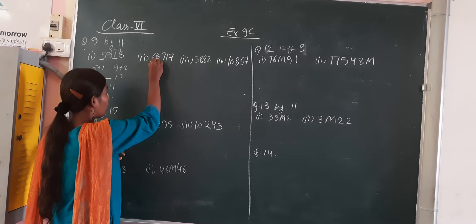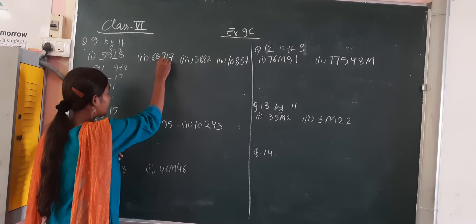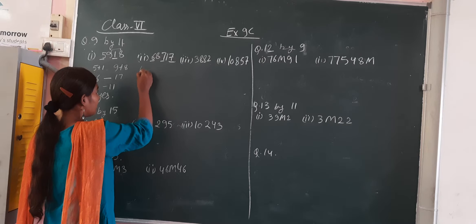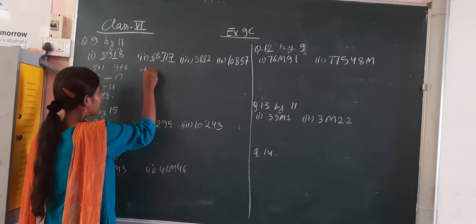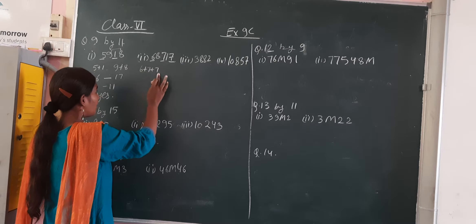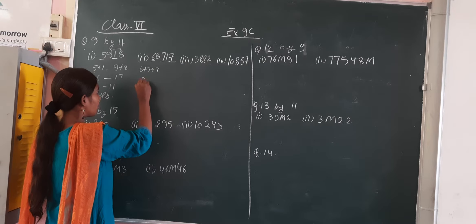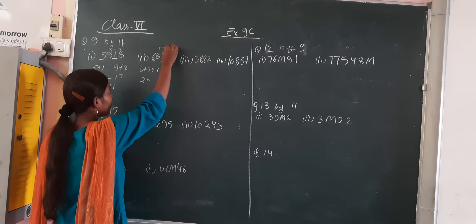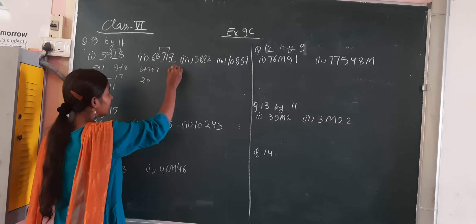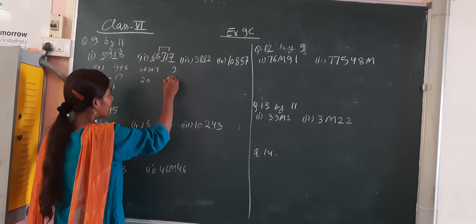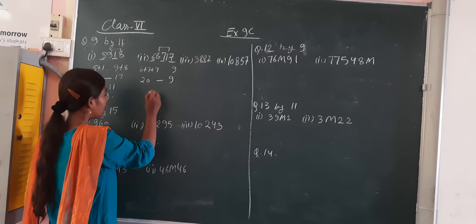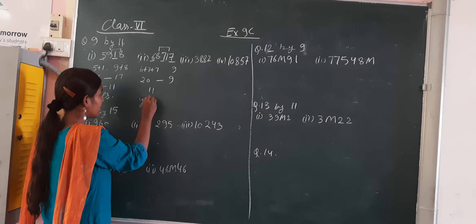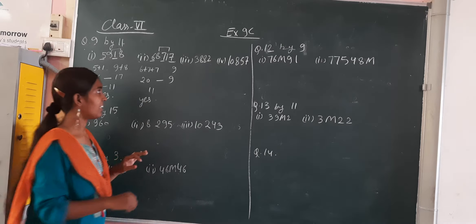Come to this one. Select the odd place digits and find the sum: 6 plus 7 plus 7 — 14 plus 6 is 20. Wait, it is coming 20. And we select the even place digits: it is 9. Now do the subtraction: 20 minus 9 is 11. So yes, this digit is also divisible by 11.